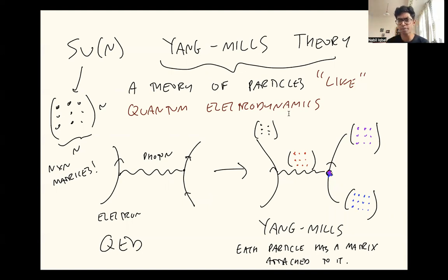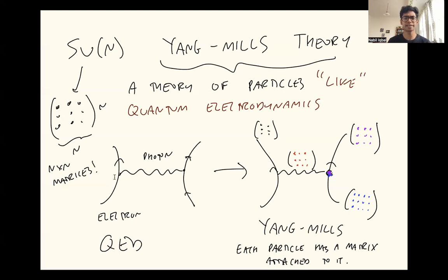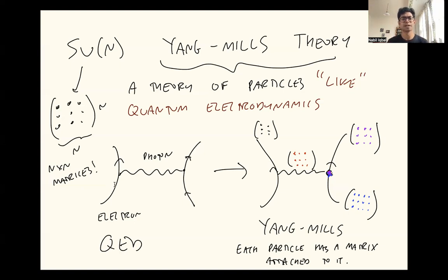Yang-Mills theory is a theory of particles that is kind of like the theory that describes electromagnetism. In electromagnetism, you have electrons and they interact via electromagnetic fields. If you include quantum mechanics, then what that means is that you can imagine there's a particle called a photon who mediates electromagnetic fields. In the theory of quantum electrodynamics that describes electrons and light in our own universe, we have electrons and their interactions are mediated by photons, or the particles of light.